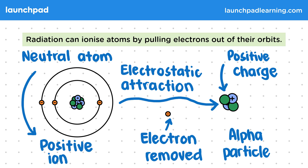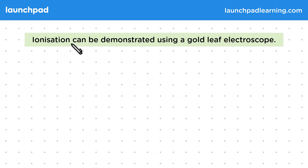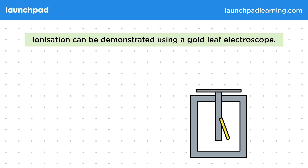Let's have a look at an experiment where we can actually see this happening. Ionisation can be demonstrated using a gold leaf electroscope. An electroscope consists of a metal plate connected to a rod in a chamber, with a charged thin gold leaf attached to the rod.